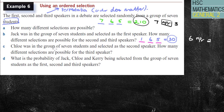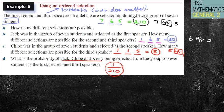Chloe was in a group of seven students and selected as the second speaker. How many different selections are possible for the third speaker? So once again, we've got first, second, and third. We've already got Jack in the first position, Chloe's in the second. So now I've just got five people to choose from for the third. Therefore, five is my answer. Or likewise, I've got five people to choose from. I've got five NPR, and then I'm just choosing one person. So it's just five times one is five. What is the probability of Jack, Chloe, and Kerry being selected from the group of seven students? Well, there's only one combination to have Jack, Chloe, and Kerry. Therefore, I've got one out of 210 people to choose from.